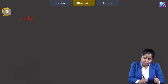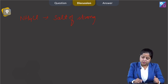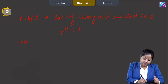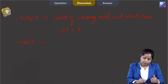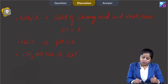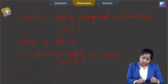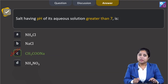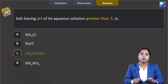NH₄Cl is a salt of strong acid and weak base, so its pH is less than 7. NaCl is a salt of strong acid and strong base, so its pH is equal to 7. NH₄NO₃ is a salt of strong acid and weak base, so its pH is less than 7. Therefore the correct answer is option 3: the pH of aqueous solution of sodium acetate, CH₃COONa, is greater than 7.